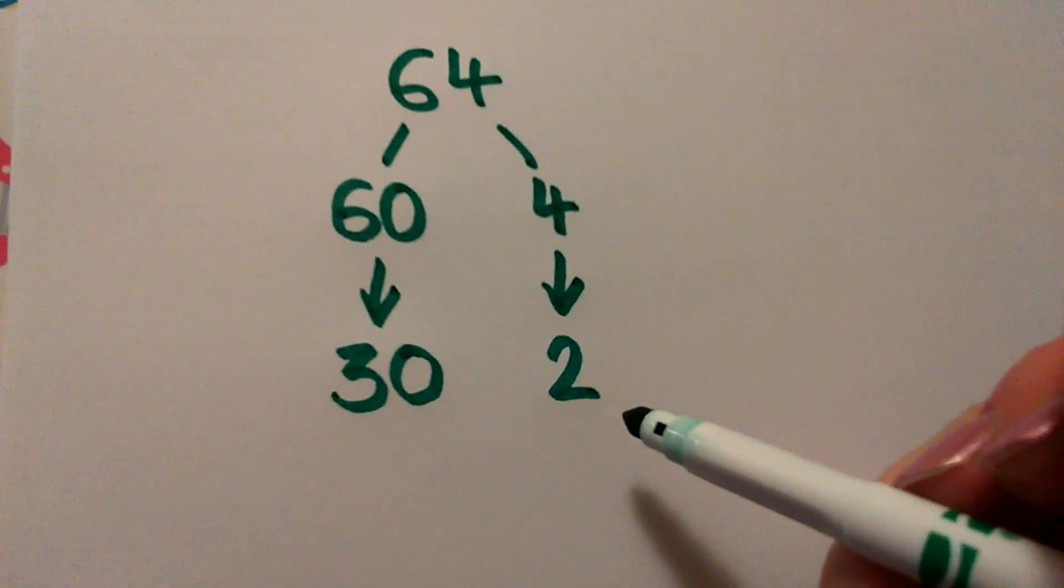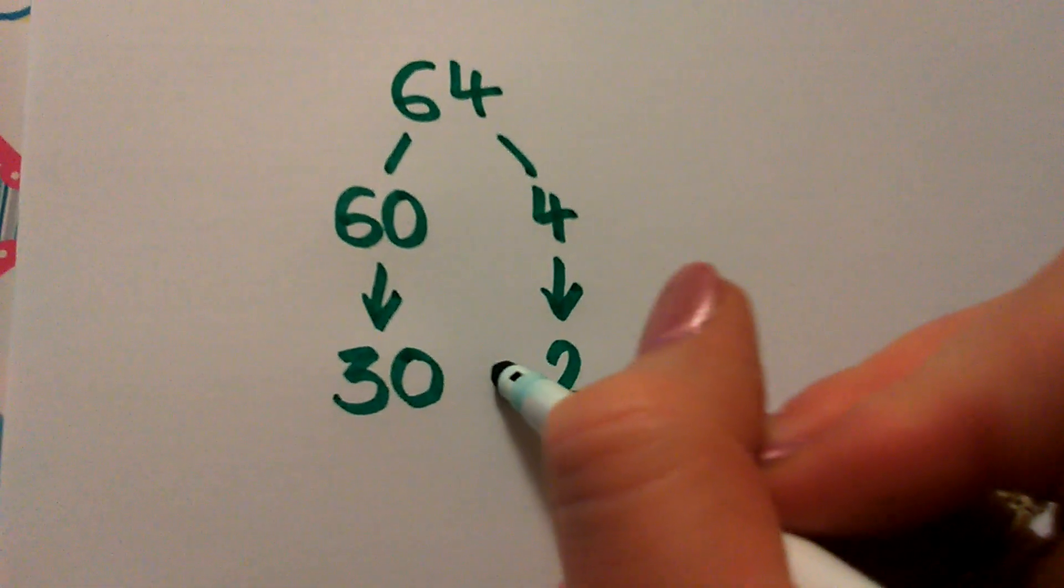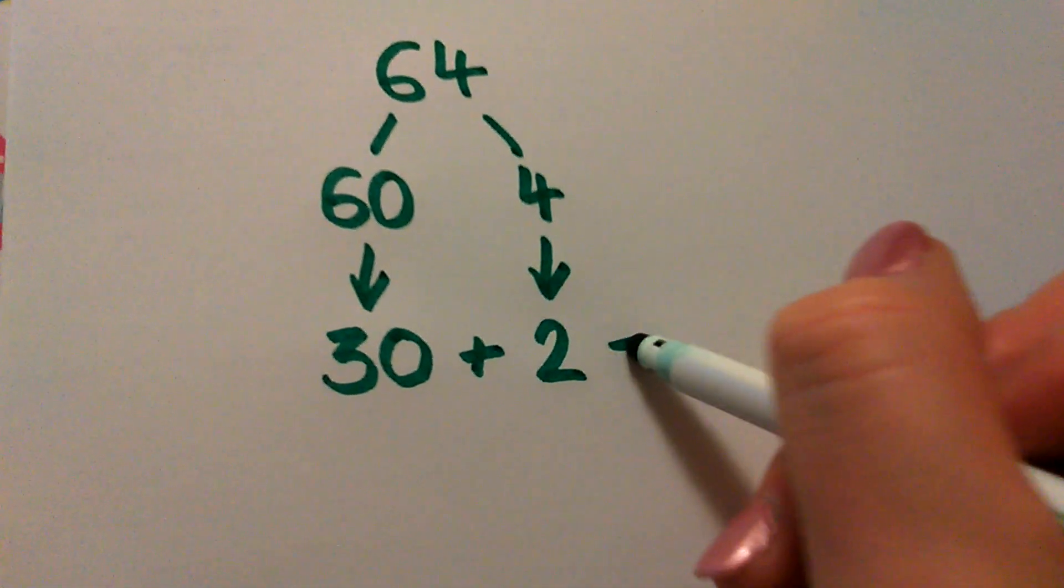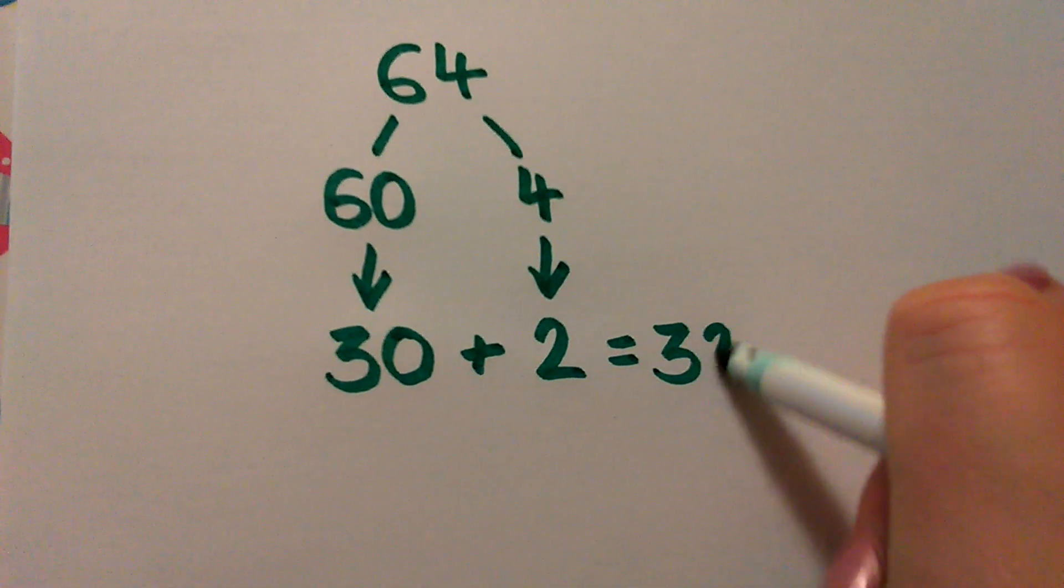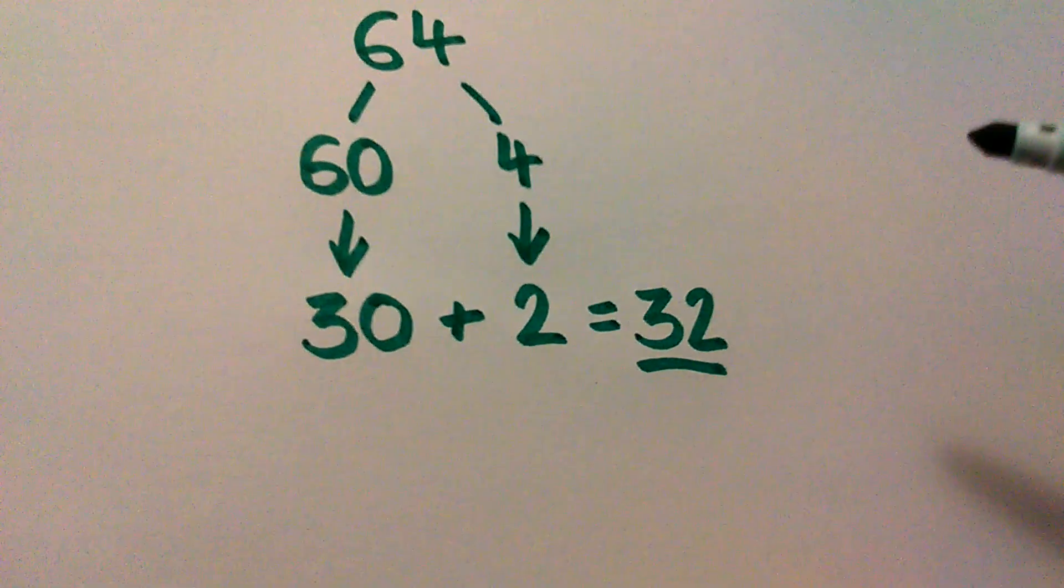And then all I have to do is add these two parts back together again. So 30 add 2 equals 32. And that's my answer. 32 is half of 64.